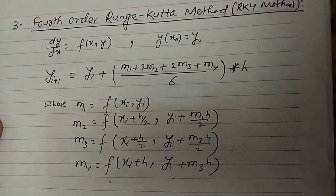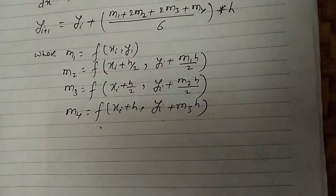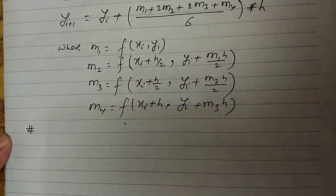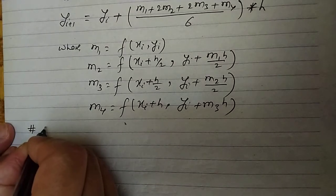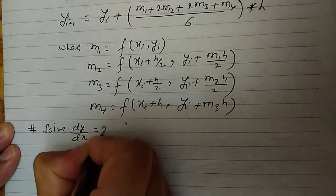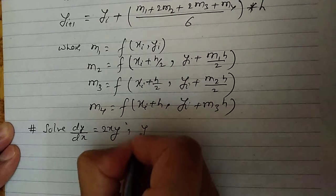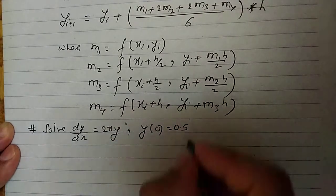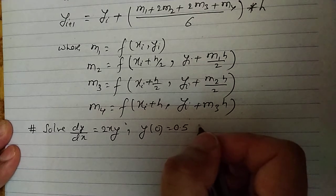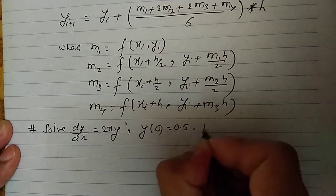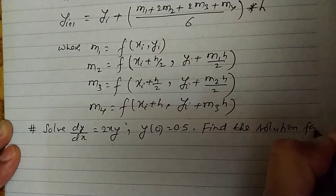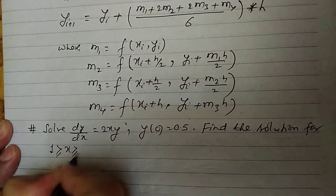Let us do a numerical example related to the RK4 method. Solve: dy/dx = 2xy, y(0) = 0.5. Find the solution for 0 ≤ x ≤ 1.